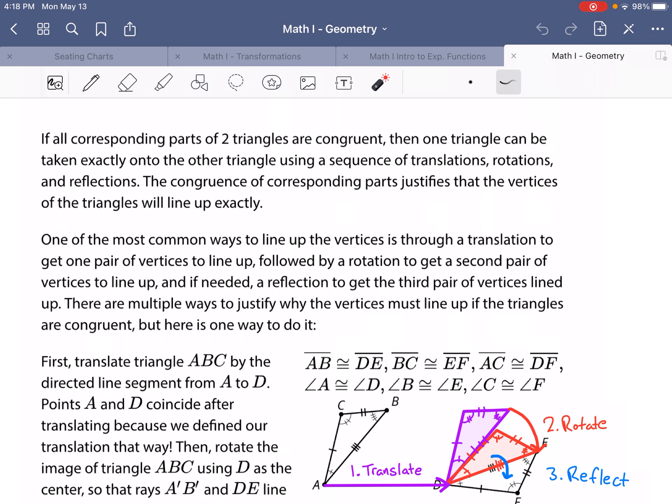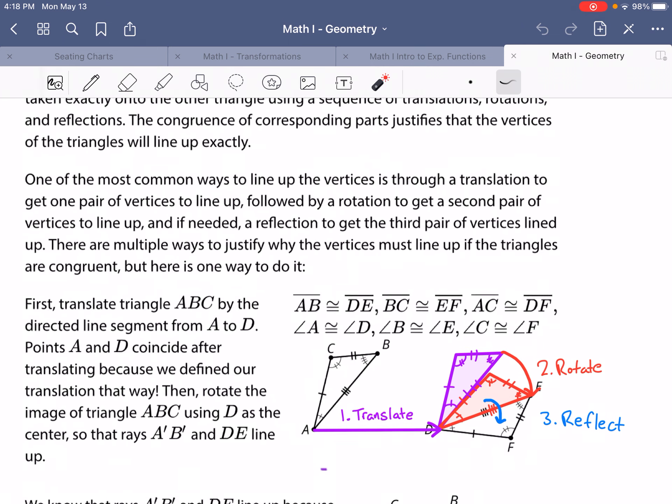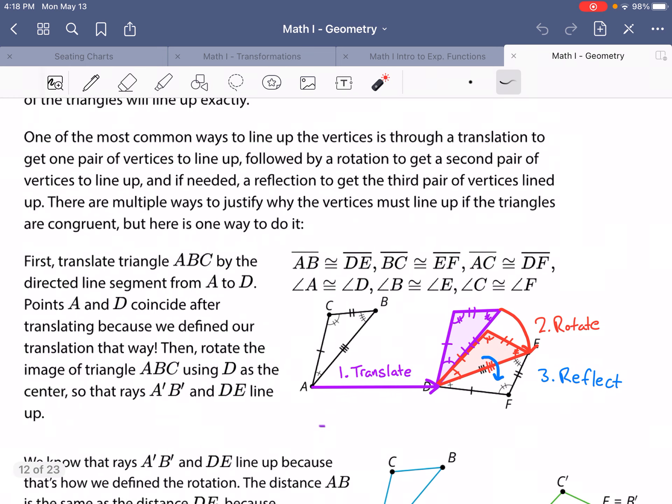One of the most common ways to line up the vertices is through a translation to get one pair of vertices to line up, followed by a rotation to get a second pair of vertices to line up, and if needed, a reflection to get the third pair of vertices.